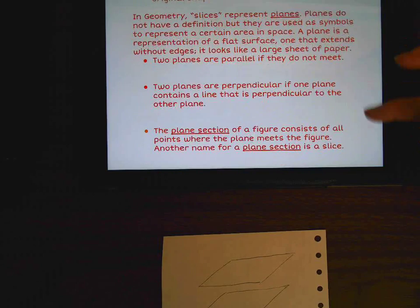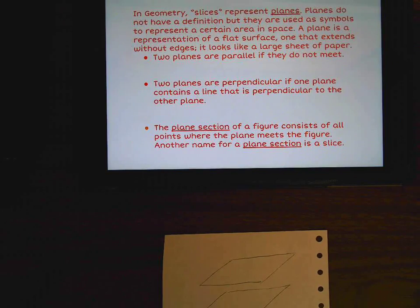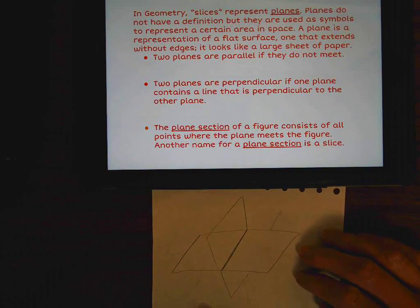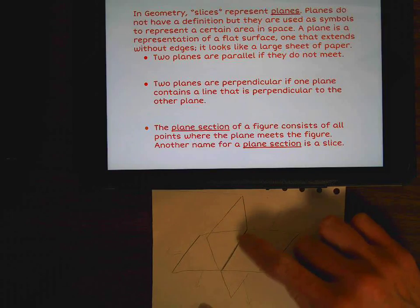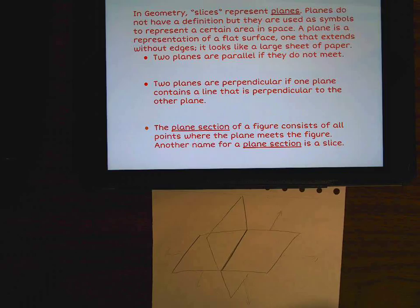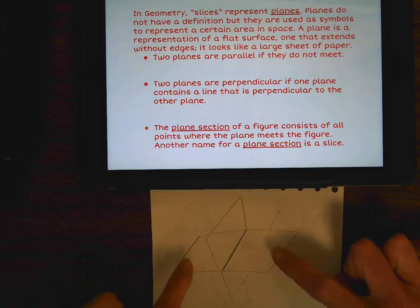All right, so hopefully we're getting a better idea of what a plane is. The plane section of a figure consists of all the points where the plane meets the figure. So again, the plane section, especially on this drawing right here, the plane section where they meet is all along this straight line right here. That would be all of the places that they meet. Another name for a plane section is a slice. So we are slicing this plane by this plane.